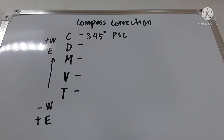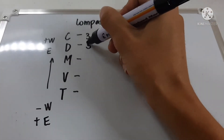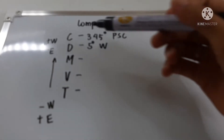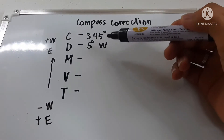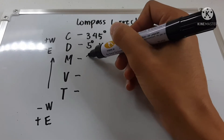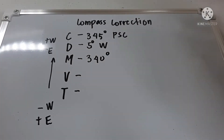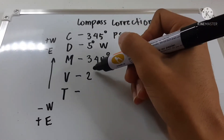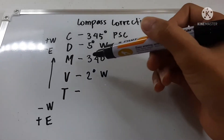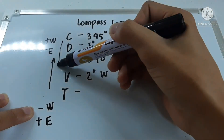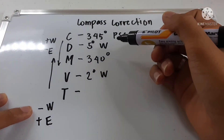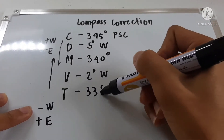Now that we know the deviation is 5 degrees west, going from compass to true we subtract west. So 345° minus 5° west gives a magnetic bearing of 340 degrees. Then applying the updated variation of 2 degrees west, we subtract again: 340° minus 2° west gives us 338 degrees. This is now the true bearing.